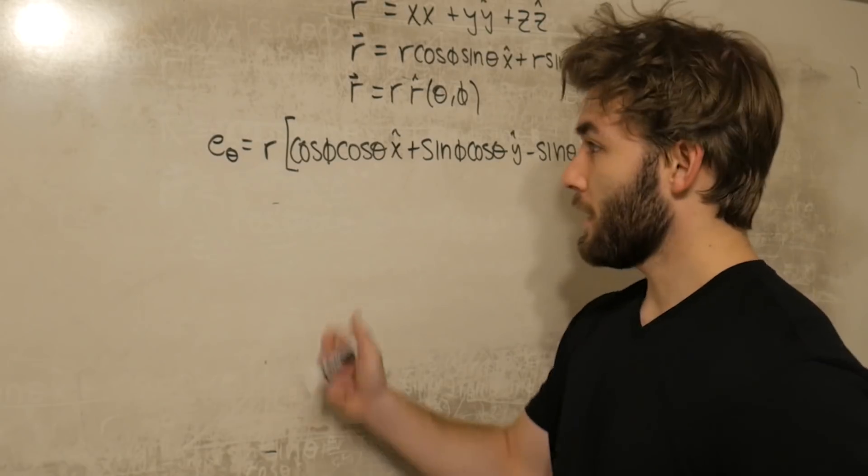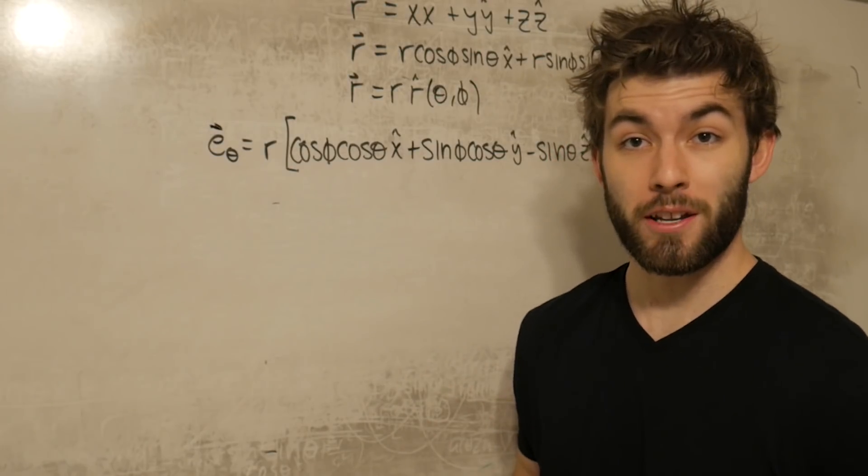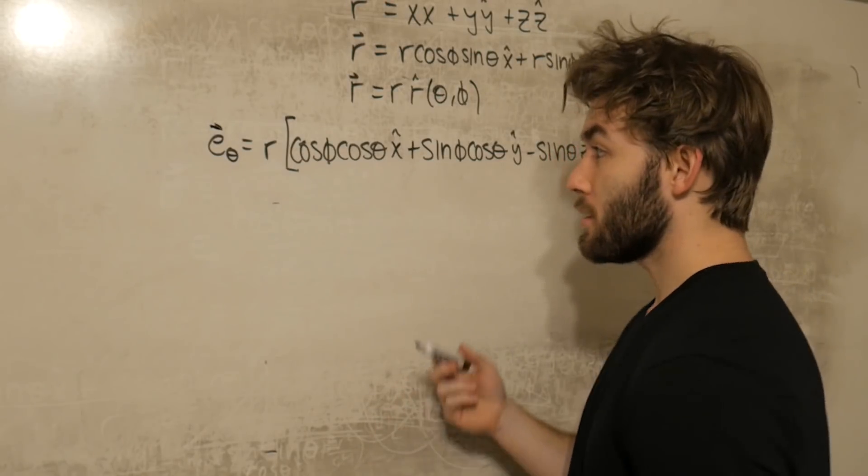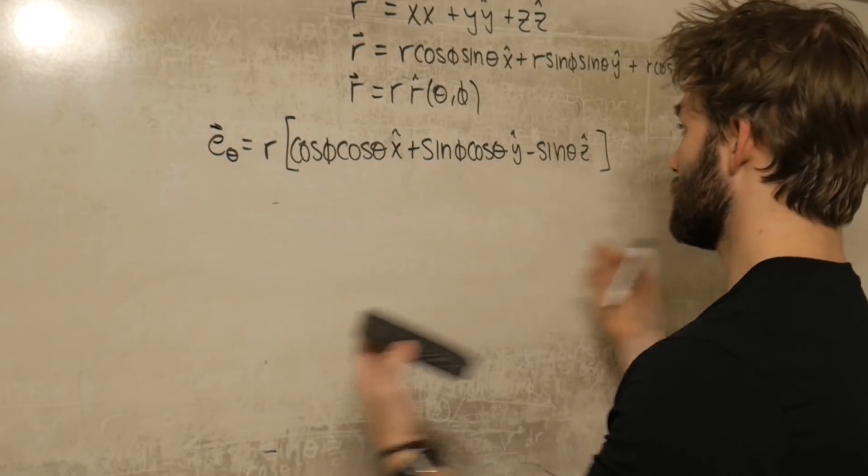Great. Okay, well now that we have a vector for e sub theta, the next step is to just turn it into a unit vector. And we can do that by dividing by the magnitude of all this. And it looks pretty involved, but it's really not too bad.